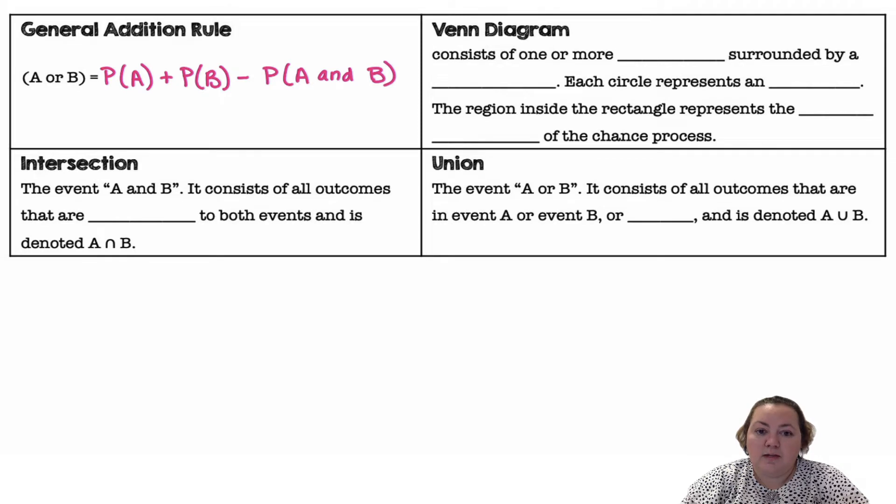We can use a Venn diagram to help us with some probability. A Venn diagram consists of one or more circles surrounded by a rectangle. Each circle represents an event. The region inside the rectangle represents the sample space of the chance process.